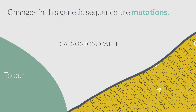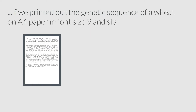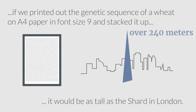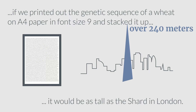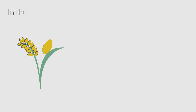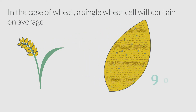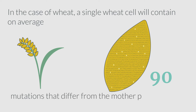To put these mutations into perspective, if we printed out the genetic sequence of a wheat plant on A4 paper in font size 9 and stacked it up, it would be as tall as The Shard in London. In the case of wheat, a single wheat cell will contain on average 90 mutations that differ from the mother plant's genetic sequence.